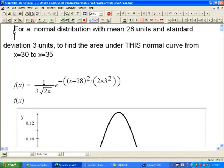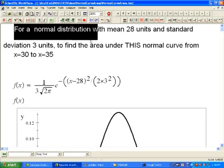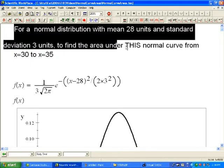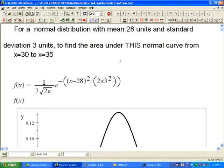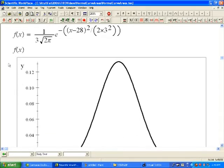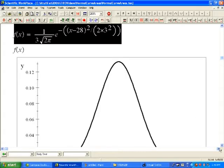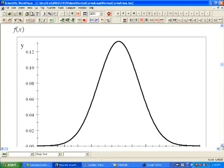Suppose we have a normal distribution whose mean is 28 and standard deviation is 3, and we have to find the area under this normal curve from x equals 30 to x equals 35. Here I wrote the density function of this normal distribution just to be able to get the graph.